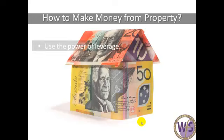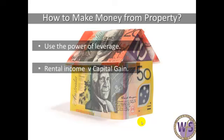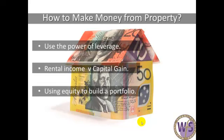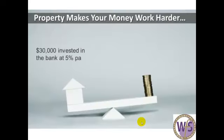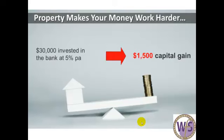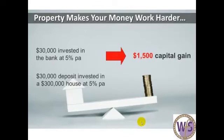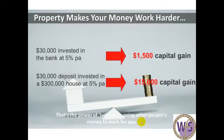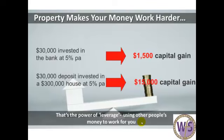So let's have a quick look at how to make money from property. It's about using the power of leverage, looking at rental income versus capital gain, and using equity to build a portfolio. Property simply makes your money work harder for you. If you have $30,000 invested in the bank at 5%, you make $1,500 in interest for the year and get taxed on that. But if you use that same $30,000 as a deposit on an investment property — even if the house only grows at 5%, you've made a $15,000 capital gain. That's 10 times more than just having that money in the bank. That is the example of leverage: using the bank's money to make money for you.